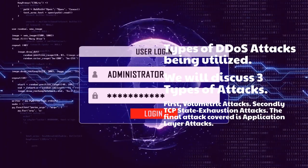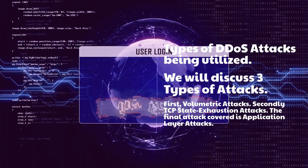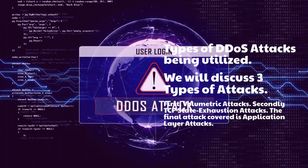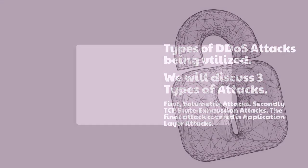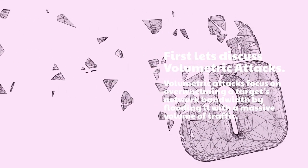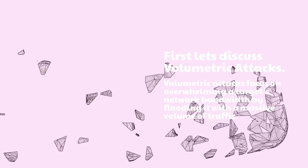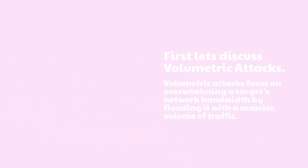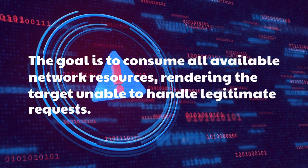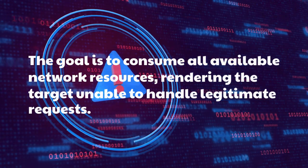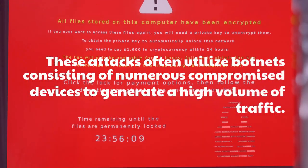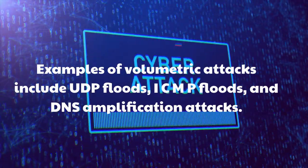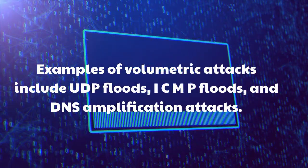There are three types of DDoS attacks we will discuss: volumetric attacks, TCP state exhaustion attacks, and application layer attacks. Volumetric attacks focus on overwhelming a target's network bandwidth by flooding it with a massive volume of traffic. The goal is to consume all available network resources, rendering the target unable to handle legitimate requests. These attacks often utilize botnets consisting of numerous compromised devices to generate high volumes of traffic. Examples include UDP floods, ICMP floods, and DNS amplification attacks.